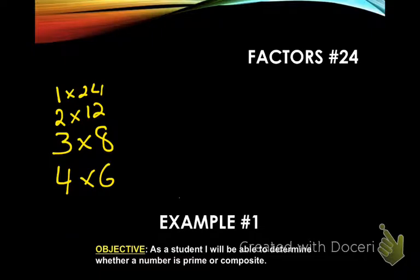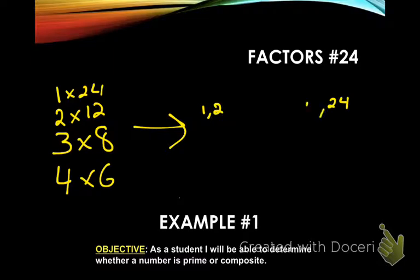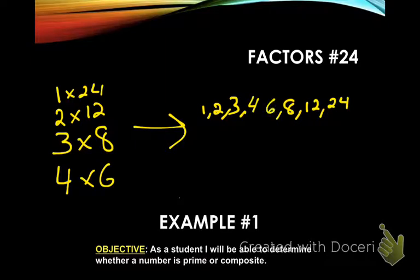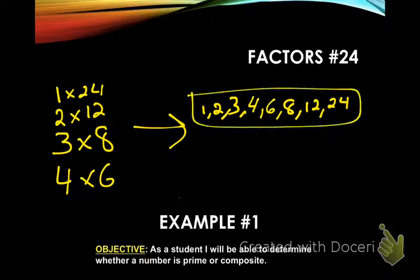People write the factors from smallest to largest. So the factors of 24 are: one, two, three, four, six, eight, twelve, and twenty-four. Those are the numbers that can be multiplied together to get 24.